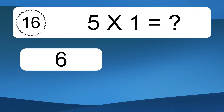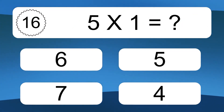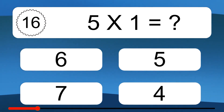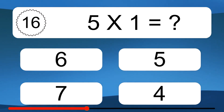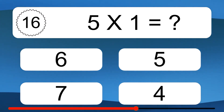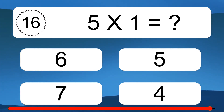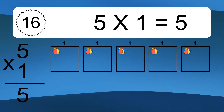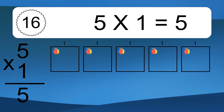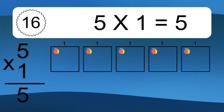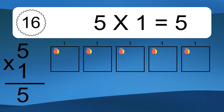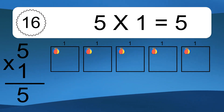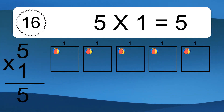Five times one equals what? Five times one equals five. We have five boxes, and each box has one colorful ball inside. If you count all the balls in all the boxes together, you will have five times one balls. This equals five balls.